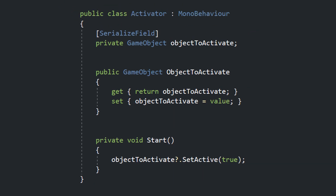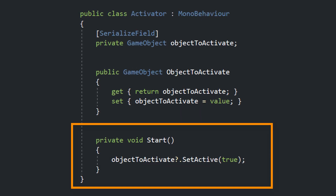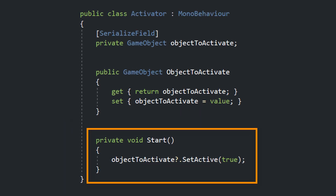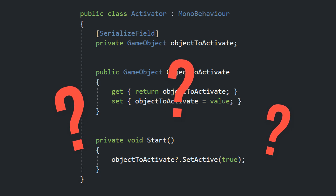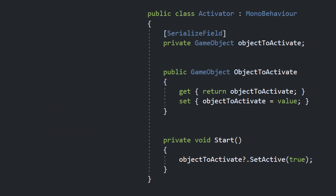The Mocking Problem. Let's say we want to test this little Activator class, which sets a given GameObject Active on Start. In our test we want to check if the SetActive method is actually called on Start. The Start method is private and you don't have direct access to it from outside the class itself.